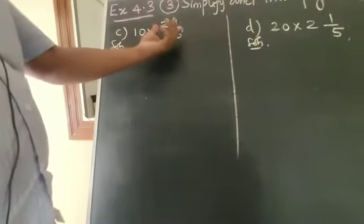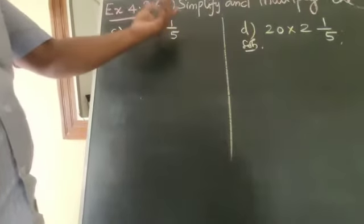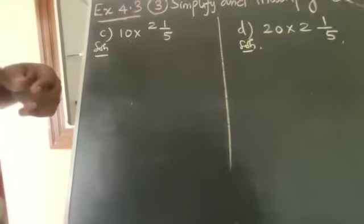10 is a whole number and 2 1/5 is a mixed fraction. Convert the mixed fraction into an improper fraction, then multiply 10 by the improper fraction.